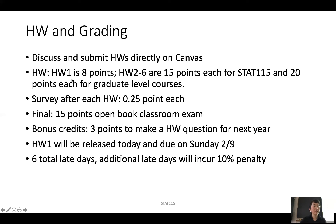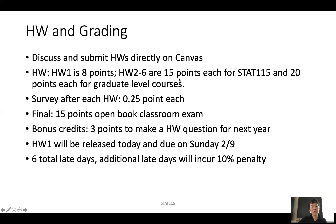Homework one is only worth eight points because we want to identify students who don't have enough background. If it takes you more than 10 hours, I'd caution you to seriously consider taking this course — maybe learn R and Python this year and take it next year. Homeworks two through six are 15 points each for Stats 115 (the undergraduate version) and 20 points for the graduate level. Graduate students have additional questions requiring deeper coding, analysis, or comparisons.